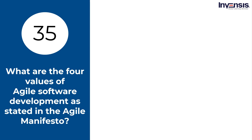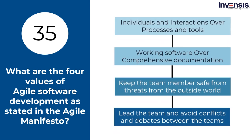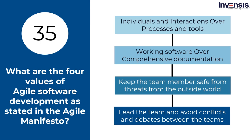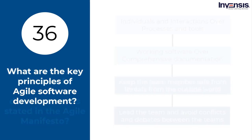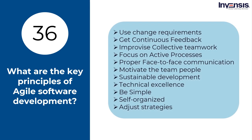What are the four values of Agile software development as stated in the Agile Manifesto? Individuals and interactions over processes and tools; working software over comprehensive documentation; customer collaboration over contract negotiation; and responding to change over following a plan. What are the key principles of Agile software development? They are customer satisfaction, using change requirements, getting continuous feedback, improving collective teamwork, focusing on active processes, proper face-to-face communication, motivating team people, sustainable development, technical excellence, simplicity, being self-organized, and adjusting strategies.